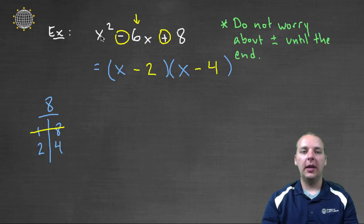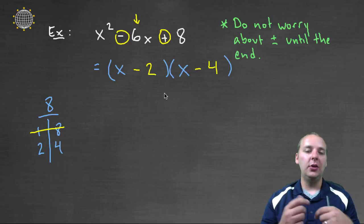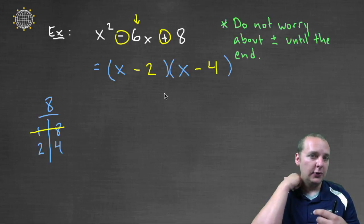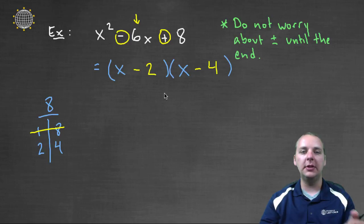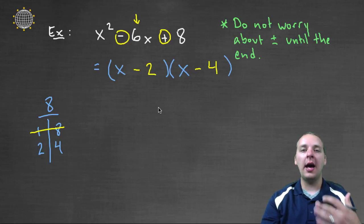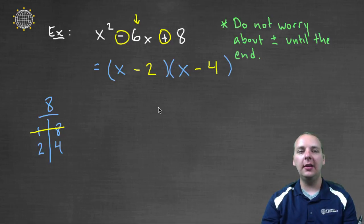Now don't be discouraged. If you do what we just did, and you get down to the finish line, and you've tried every possible option, you may not have something that multiplies to what you want, and adds to what you want. And if that's the case, you get what's known as a prime polynomial that cannot be factored. We'll talk about prime polynomials in another video, but just be aware that you're not guaranteed to be able to factor every polynomial.